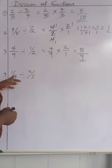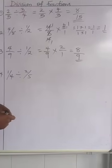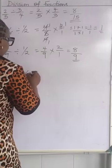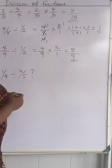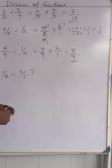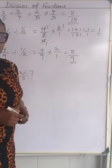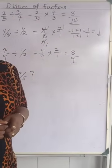Then number 4, we have 1 over 4 divided by 2 over 5. Hope you're having fun with this. What is going to be the number 4 answer? I want to see your answer in the comment section.